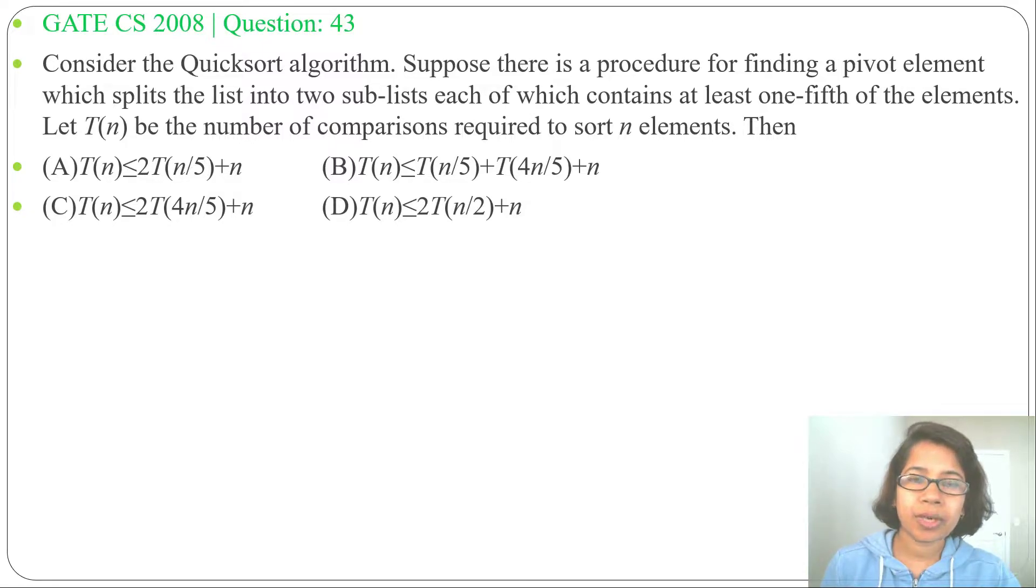Consider the quicksort algorithm, suppose there is a procedure for finding a pivot element which splits the list into two sublists, each of which contain at least one-fifth of the elements.